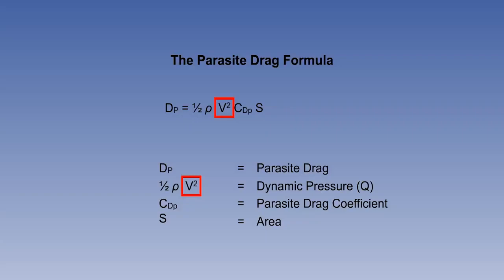If IAS is doubled, parasite drag is quadrupled, and if IAS is halved, parasite drag is reduced to a quarter of its previous value.